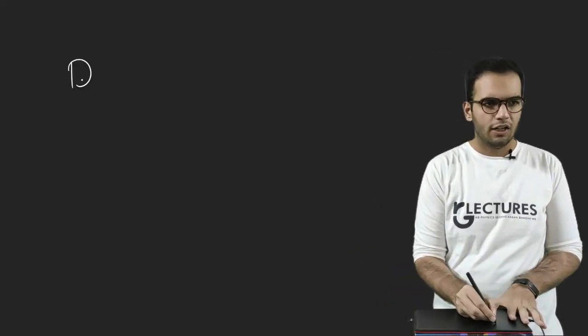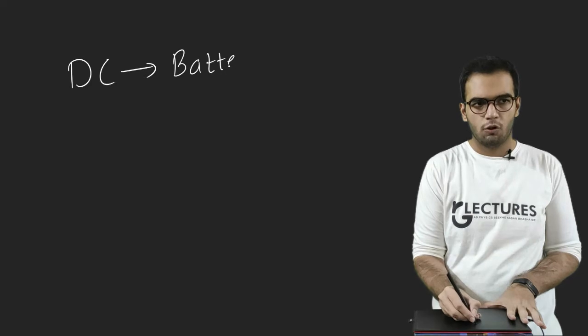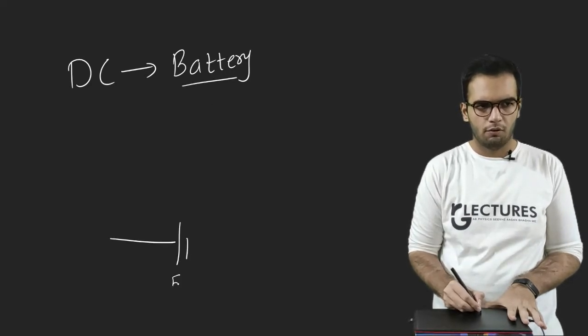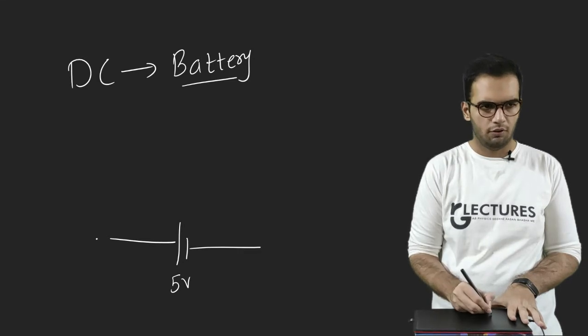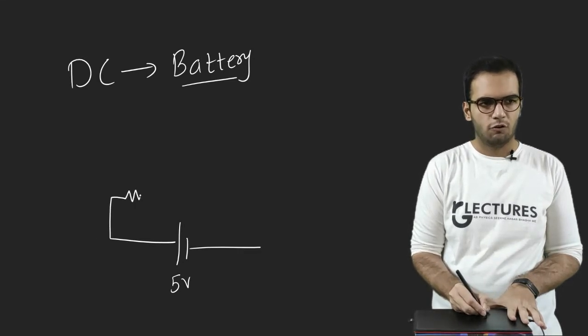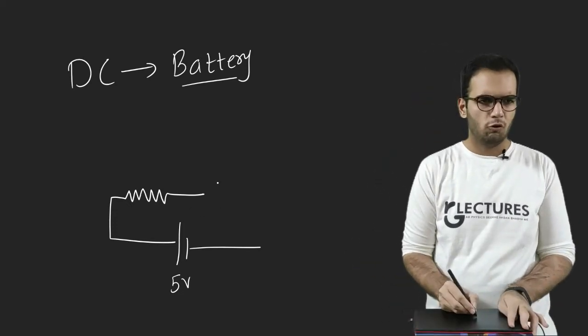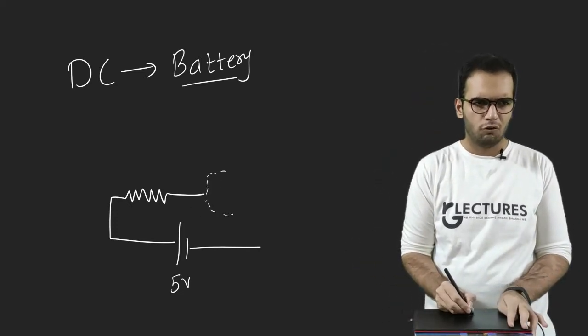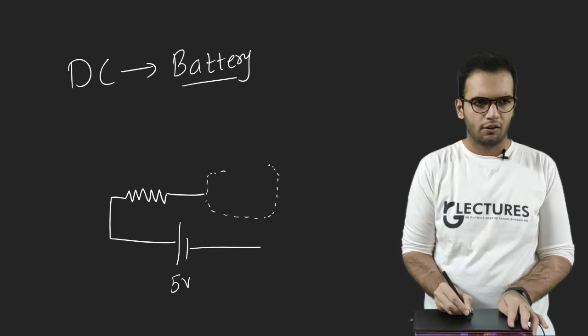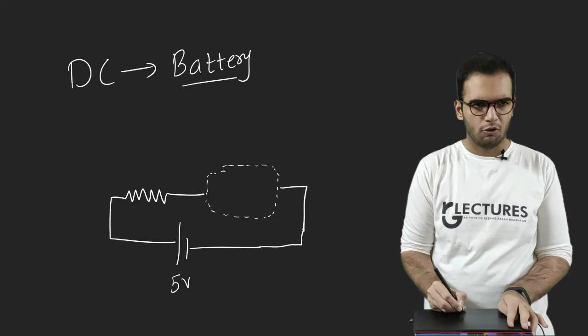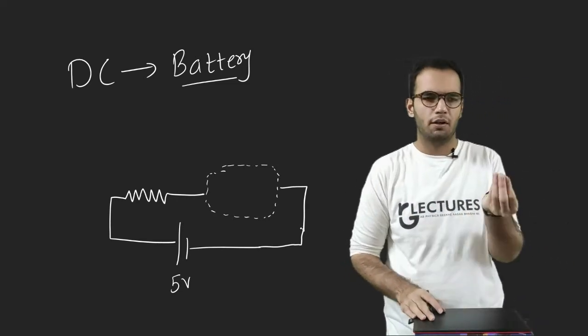Now consider a DC circuit. In DC circuit, we connect a battery as a voltage source, a constant source of battery, suppose the battery is of 5 volt. And let's assume there is a resistor. And since I want to just explain the topic, I connect here a rectangular box. Now what is inside the rectangular box? It can be anything, because I don't care. I just want to explain my topic.